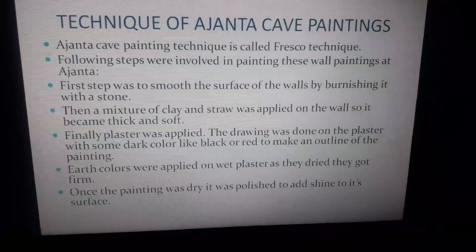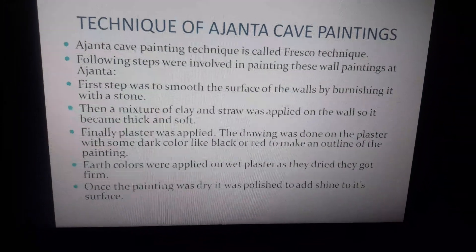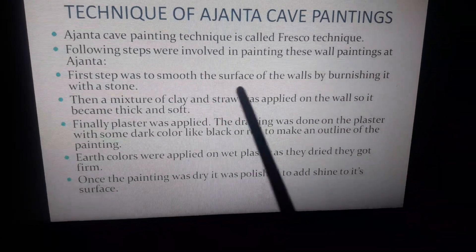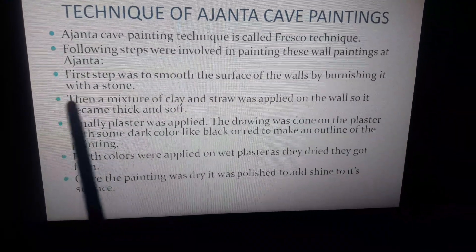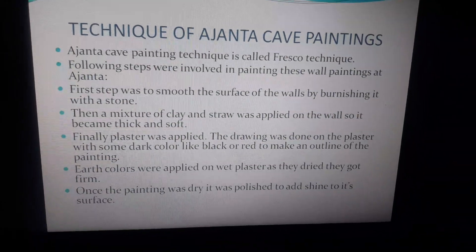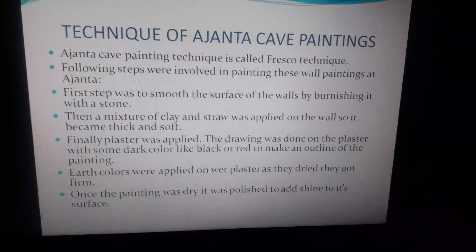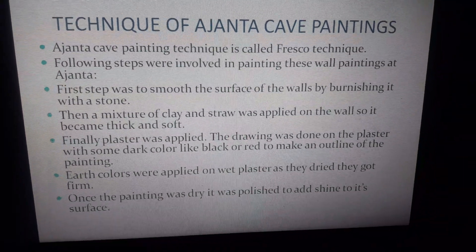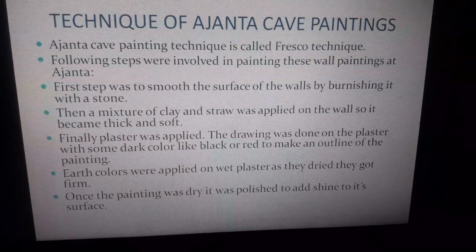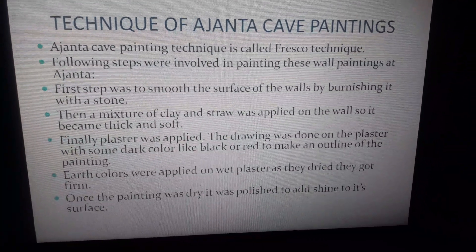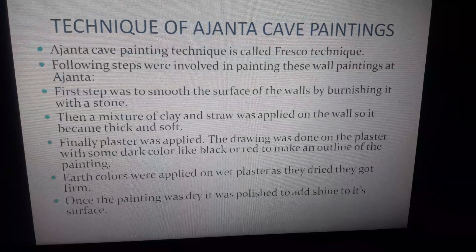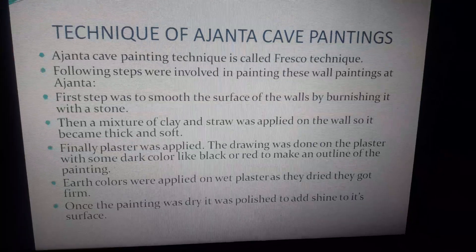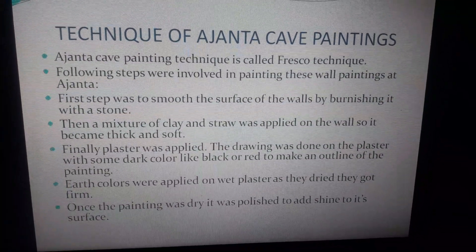The following steps were involved in painting these fresco murals. First, they smoothed the surface of the walls by burnishing it with a stone — rubbing the stone on the wall surface to make it smooth. Then, a mixture of clay and straw was applied on the wall so it became thick and soft. Finally, lime plaster was applied and the drawing was done on the wet lime plaster.